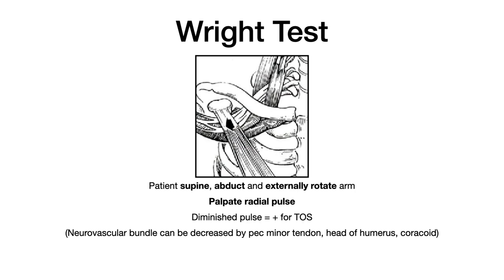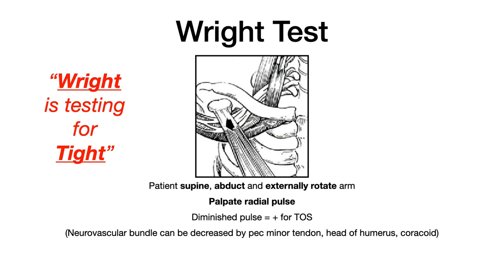The Roos test: the patient's supine, and you abduct and externally rotate their arm while palpating the radial pulse. If the radial pulse diminishes as the arm is abducted and externally rotated, the Roos test indicates thoracic outlet syndrome. The neurovascular bundle can be pinched off by structures like the pec minor, the head of the humerus, or the coracoid. Mnemonic: 'Roos is testing for tight' — if the area is too tight around the neurovascular bundle, the Roos test will show it.